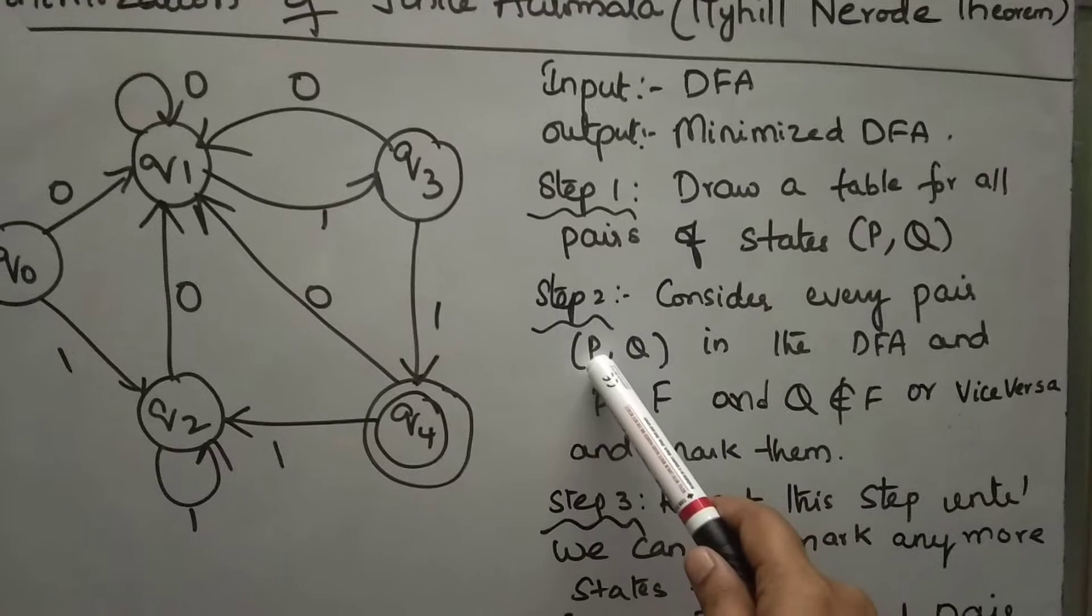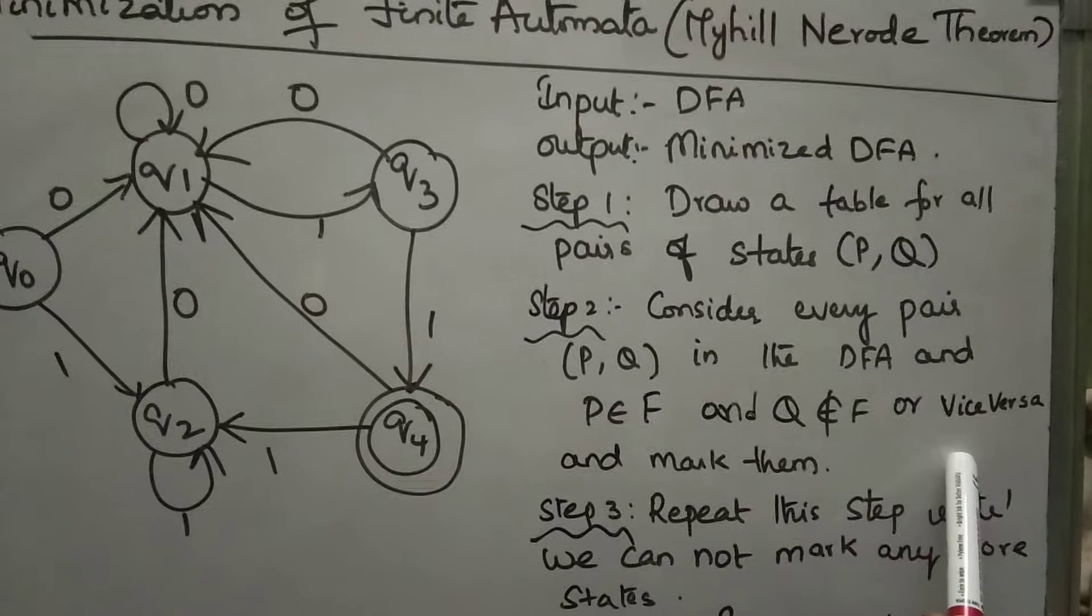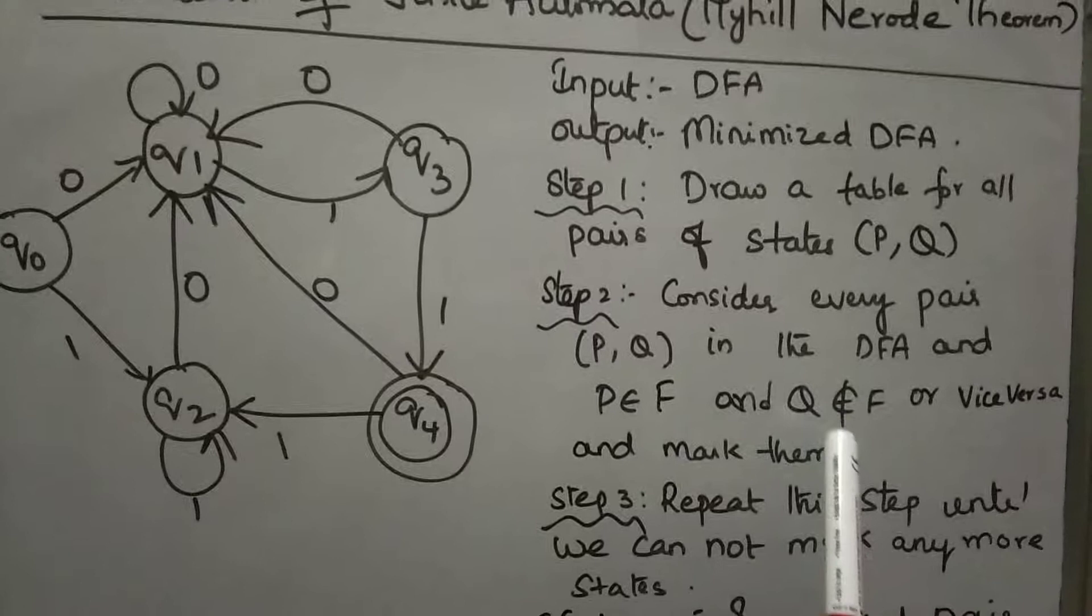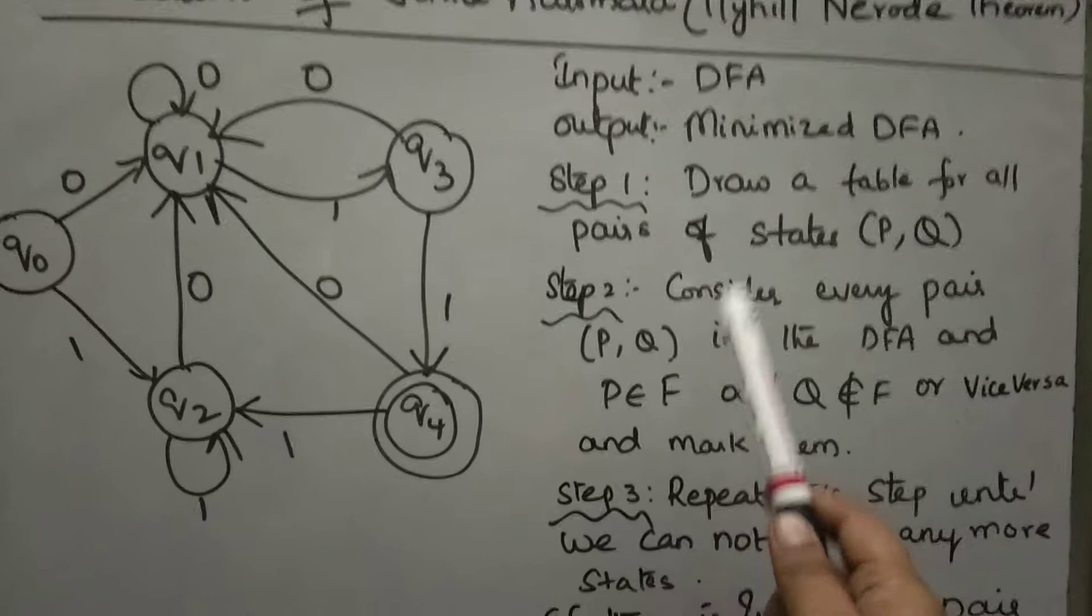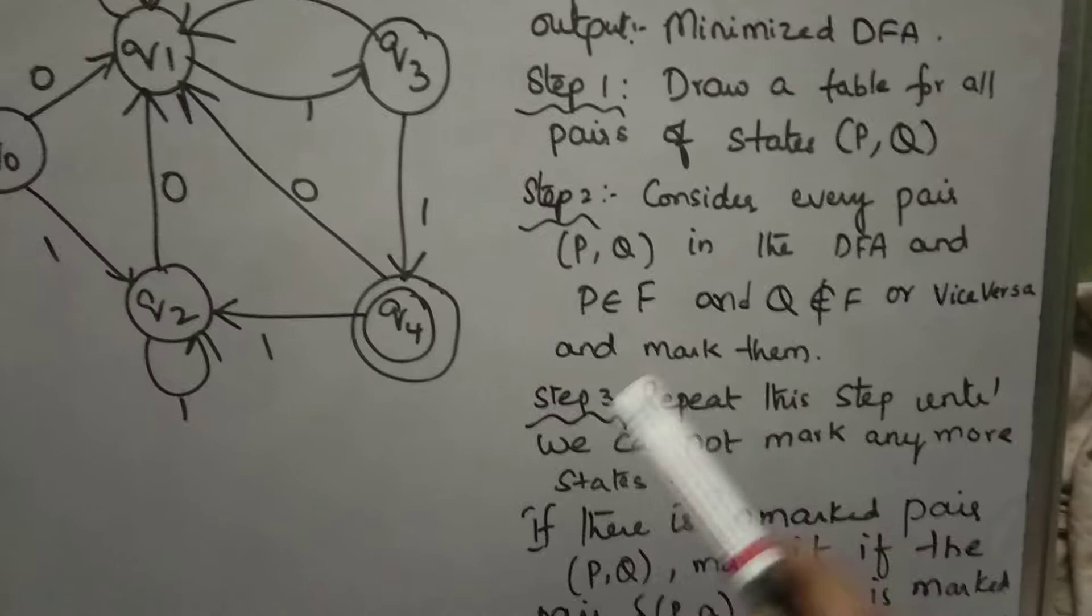Step 2: Consider every pair P, Q in the DFA and P belongs to final and Q does not belongs to final, or vice versa. If one is final and one is non-final, identify them and you can mark them.